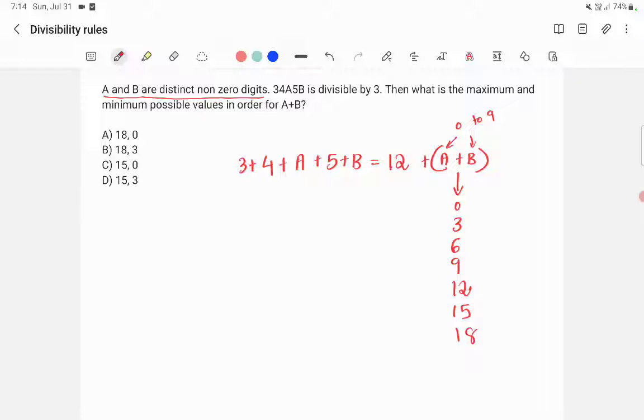So if A plus B is equal to 0, A should be 0 and B should be 0. In this case, A and B are 0. Also, A and B are not distinct. So this doesn't match our condition. So A plus B being 0 is not a possibility in this question.